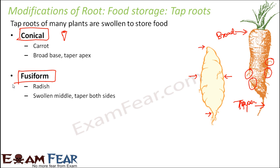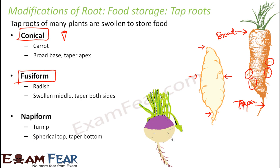So in carrot, one end is broad and the other is tapered. In radish, it is tapered on both ends with the middle swollen. In turnip, there is a spherical top and a tapered bottom — this is given the name napiform. Just as stem modifications have names like tuber and bulb, root modifications for different plants are also given different names: conical, fusiform, napiform, and so on.